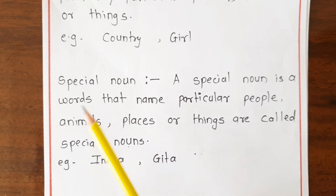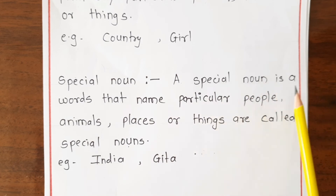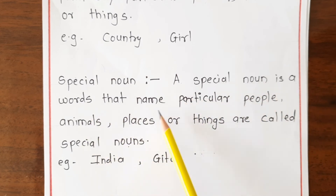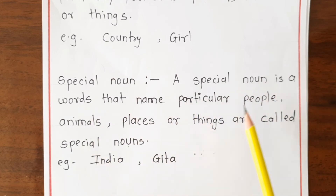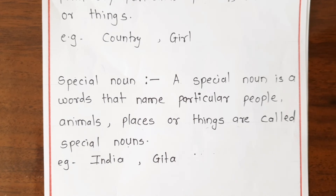A proper noun is a word that names a particular person, animal, place, or thing. Particular persons, animals, places, and things are called proper nouns.